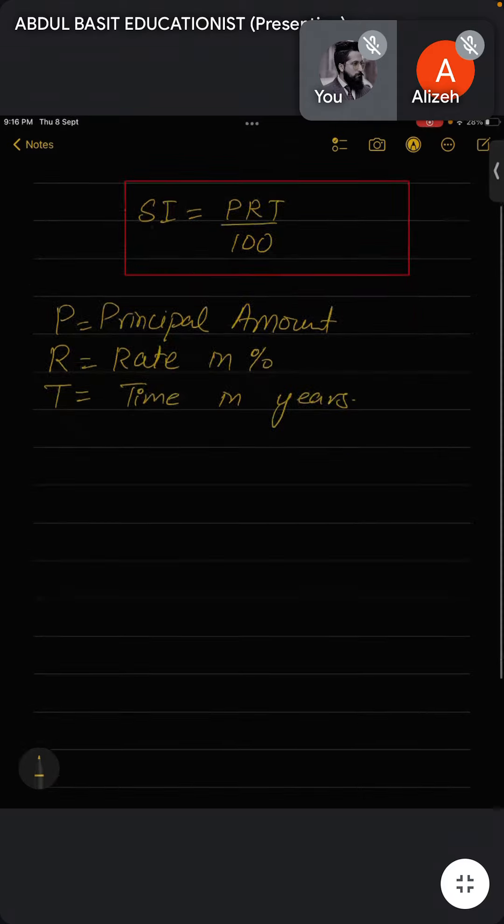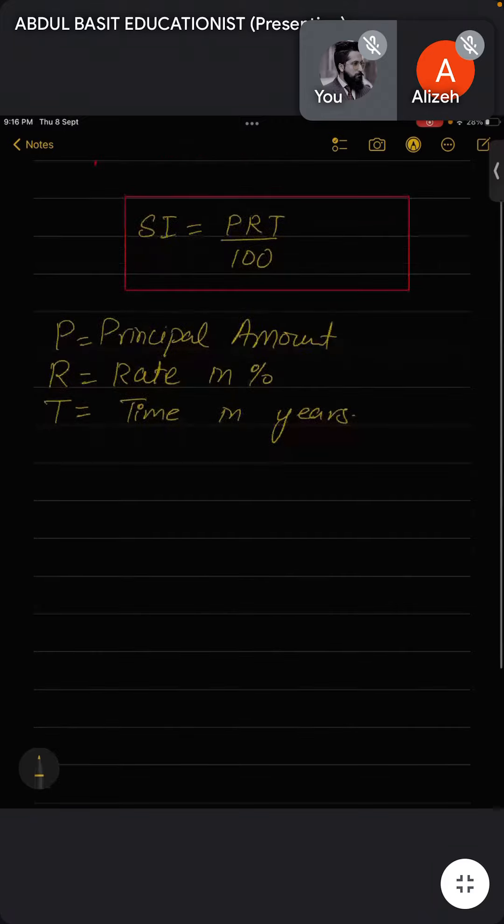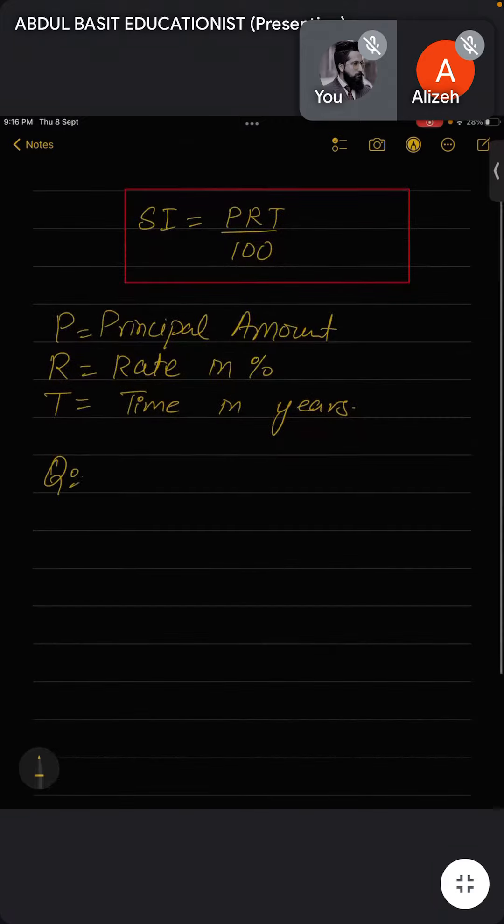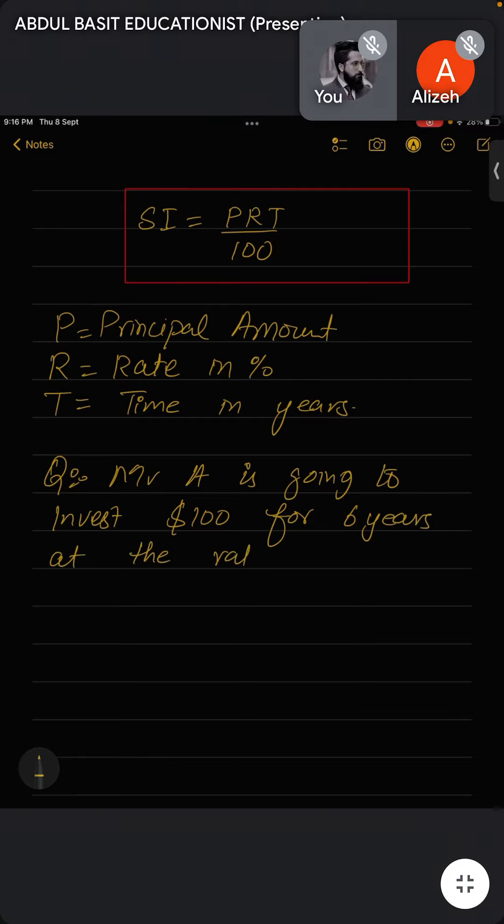So now let's study this in detail. For example, I have a question: Mr. A is going to invest $100 for 6 years at the rate of 10% simple interest.